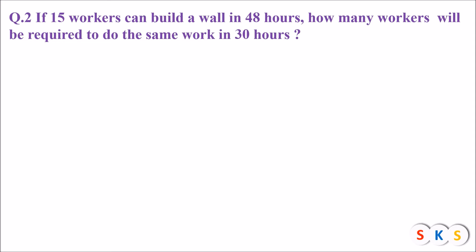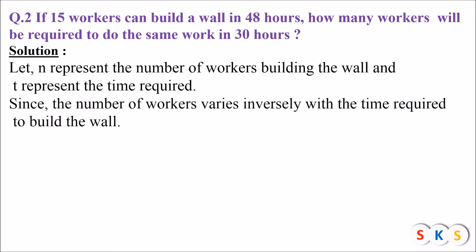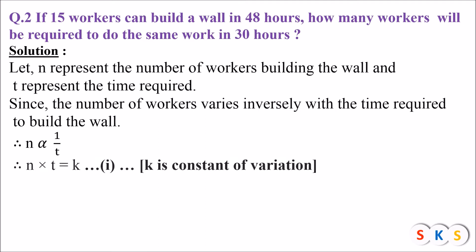Let's see the solution. Suppose n represents the number of workers and t represents the time taken by them. There is an inverse variation between number of workers and time taken to complete the wall. The rule of inverse variation says the product of those two quantities is constant, so n × t = k, where k is the constant of variation.